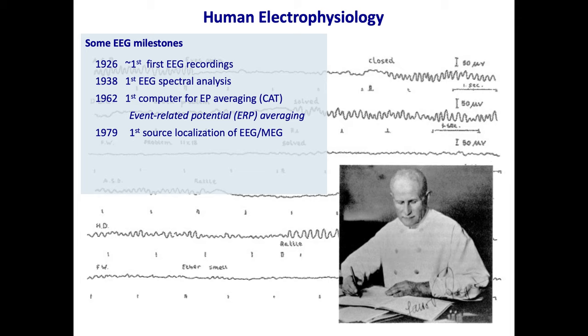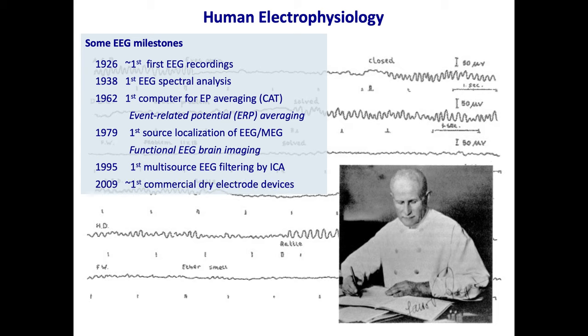Then in 1979 there was the first source localization of the EEG and MEG and this was the start of the era of functional EEG brain imaging. In 1995 the first multi-source EEG filtering by ICA to remove artifacts and separate sources, and in 2009 the first commercial dry electrode device. This is just a short history of EEG over the years and we're really going to focus on the first era and see how we can go beyond event-related potential averages.